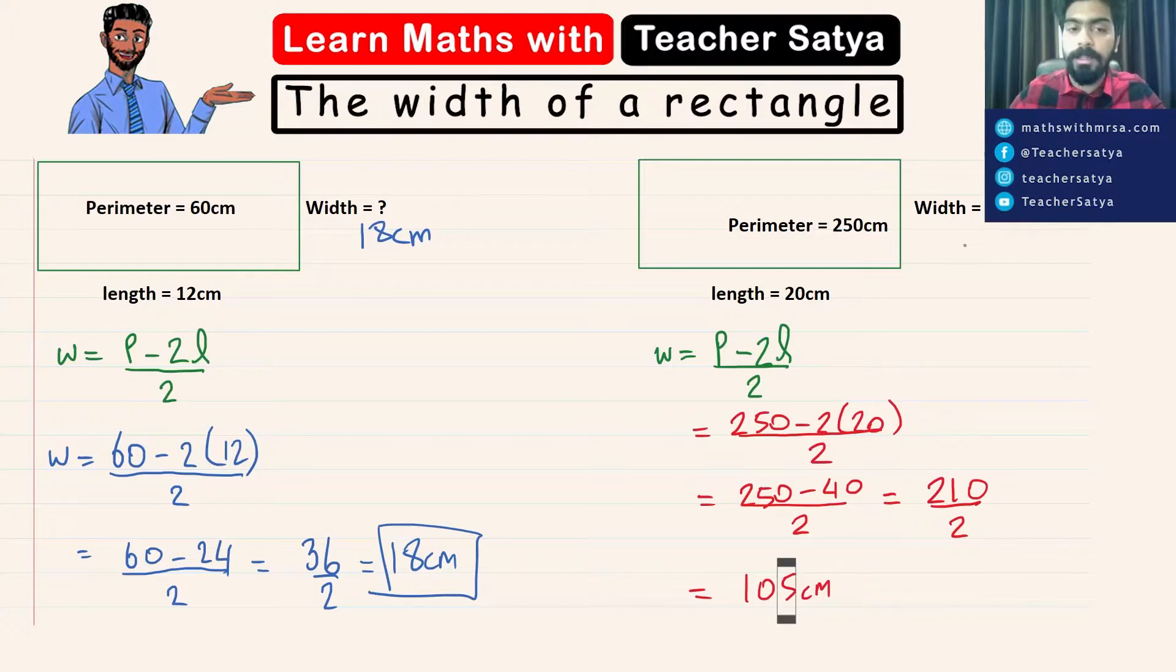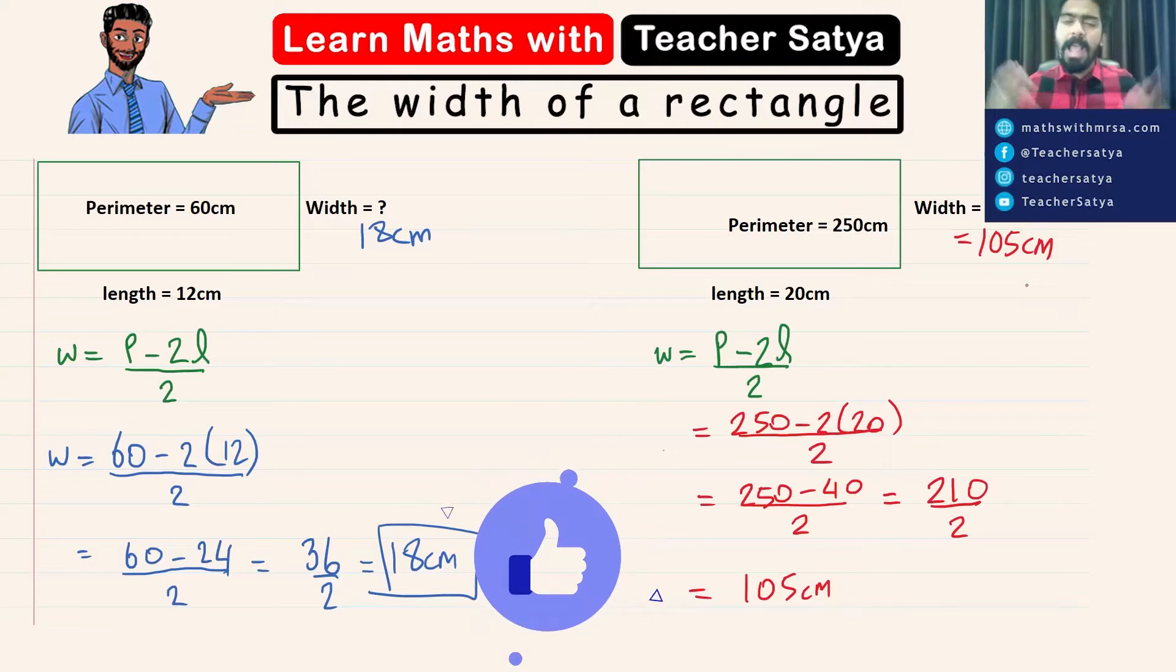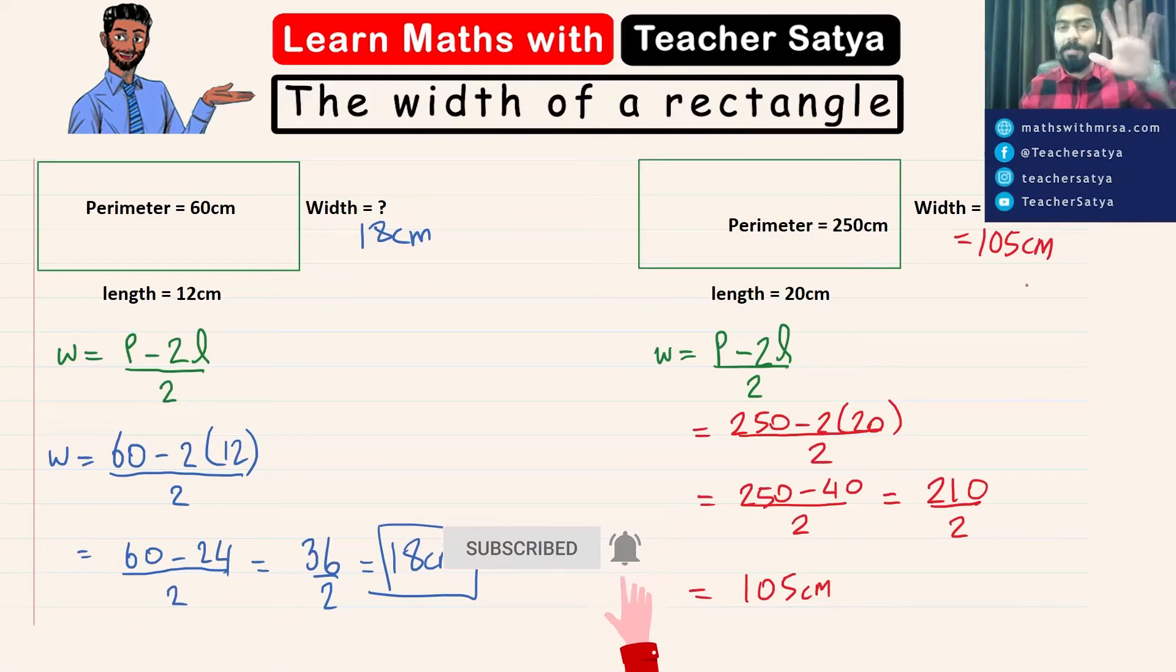Therefore, the width in this question would be 105 centimeter. And that is how we would find the width of a rectangle when we know its perimeter and its length. If you did enjoy this video, don't forget to hit on that like button and subscribe so you don't miss out on any future maths videos. Until next time, have a nice day.